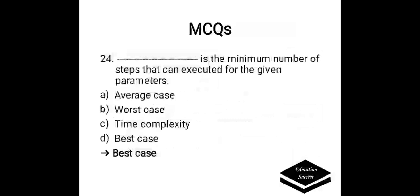Dash is the minimum number of steps. Options: a) average case, b) worst case, c) time complexity, or d) best case. Correct answer is best case. Best case is the minimum number of steps that can be executed for the given parameters.